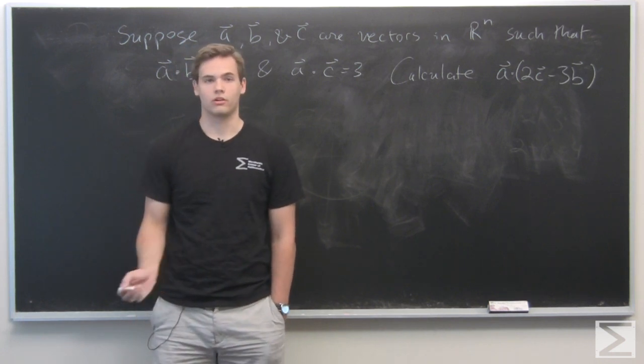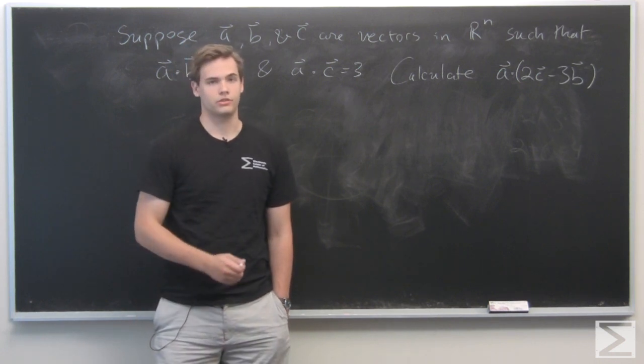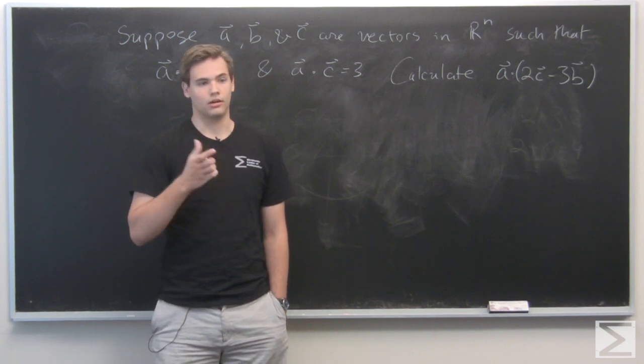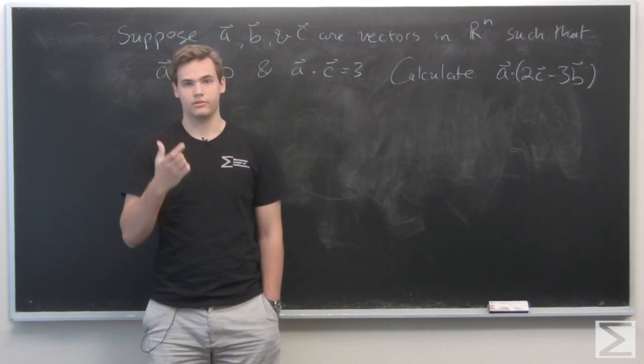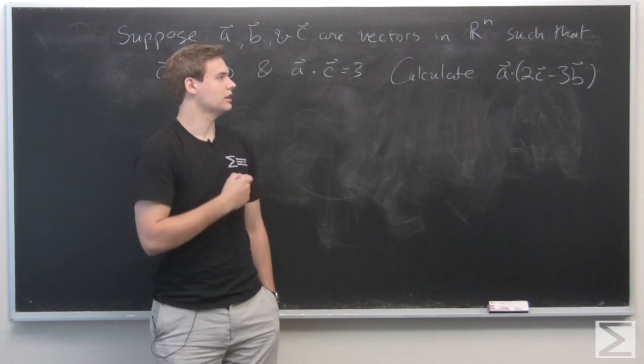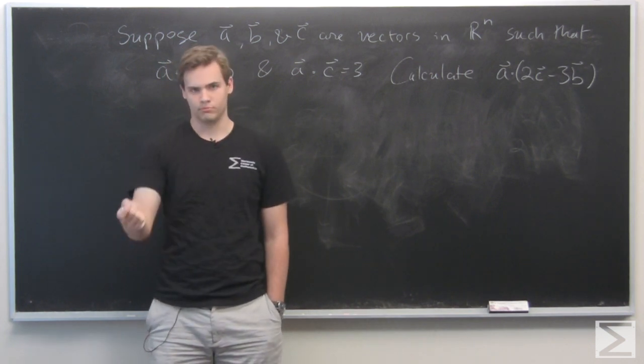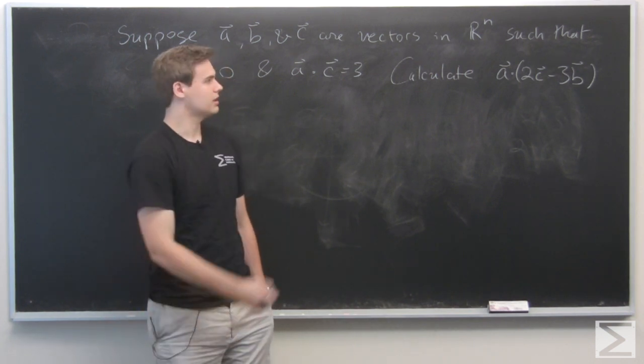Now that we have the dot product on vectors in R^n, we've seen that it distributes over sums of vectors and it is linear with respect to scalars. So you can pull out scalars in the dot product multiplication.